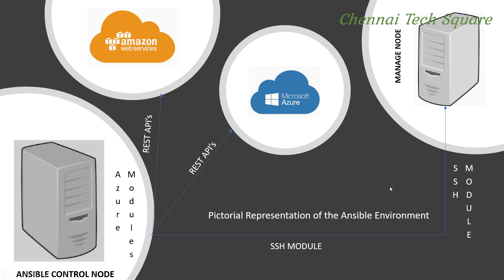In our environment, other than Linux managed nodes, we are going to set up AWS and Microsoft Azure, which will be managed through Ansible cloud modules. The communication between the control node and the cloud environment will be through REST APIs, which is nothing but the Application Programming Interface. In my next video, I will talk about the prerequisites and how to install Ansible, and the steps involved to integrate Ansible with AWS and Azure to perform all cloud-related tasks.